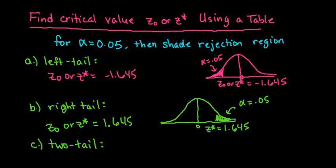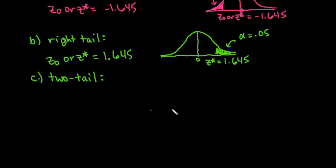The last one is for a two-tail. If you have a two-tail, that means that you have both tails shaded, and your alpha is divided evenly between the two. So that means that half of alpha is here, and half of alpha is here.